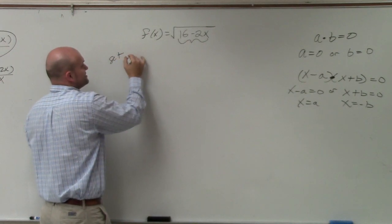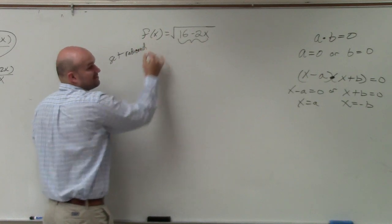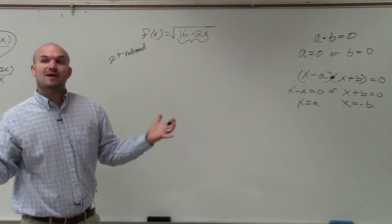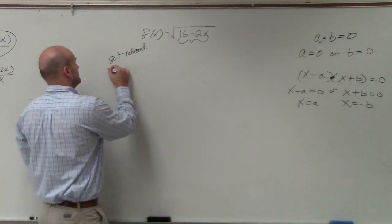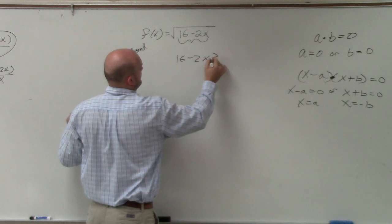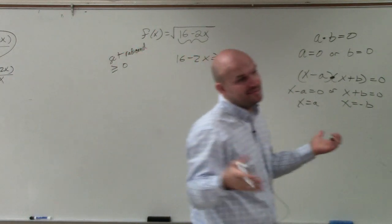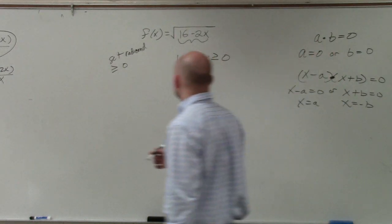So you just set your radicand. Remember last time we set the denominator? Now you're going to set the radicand, which is going to be greater than or equal to 0. Because we know whatever the values of x have to make that equal to 0. Now we go ahead and solve.